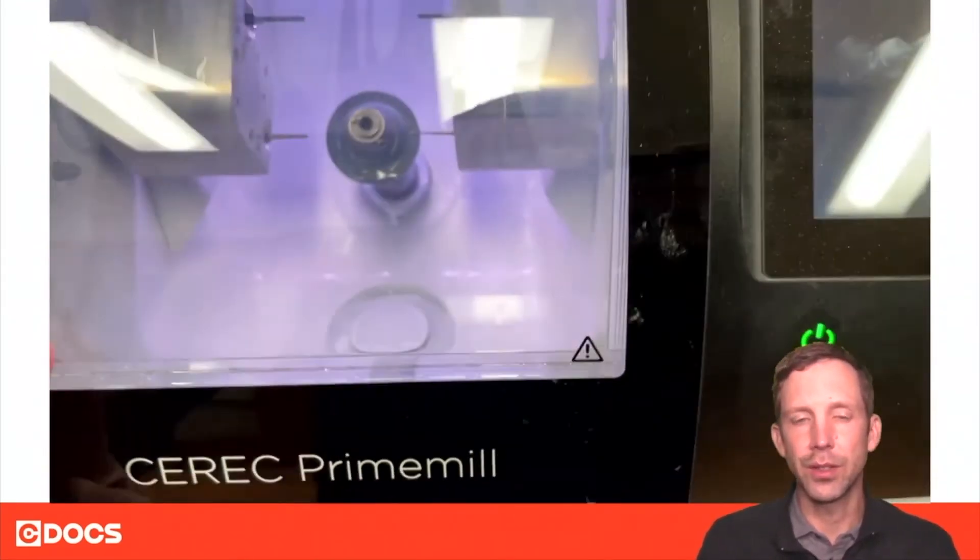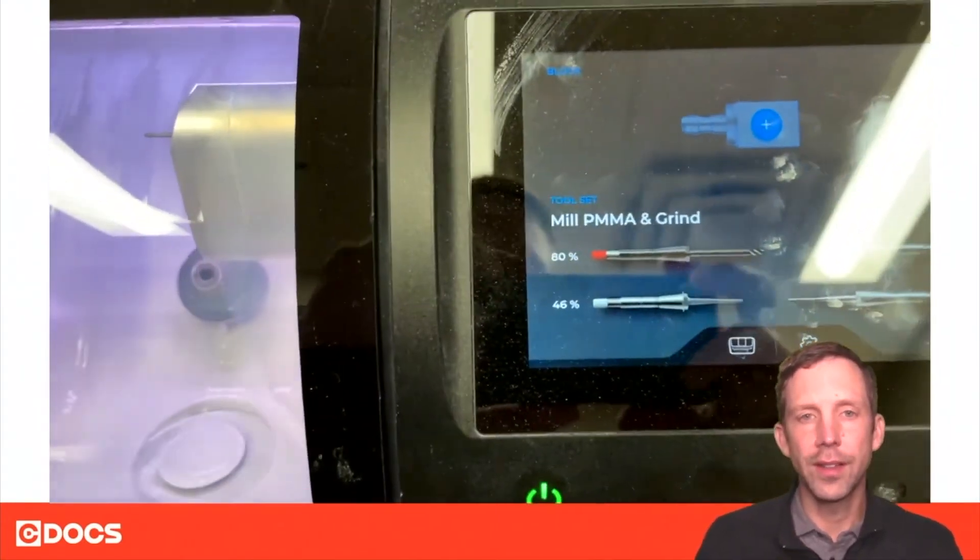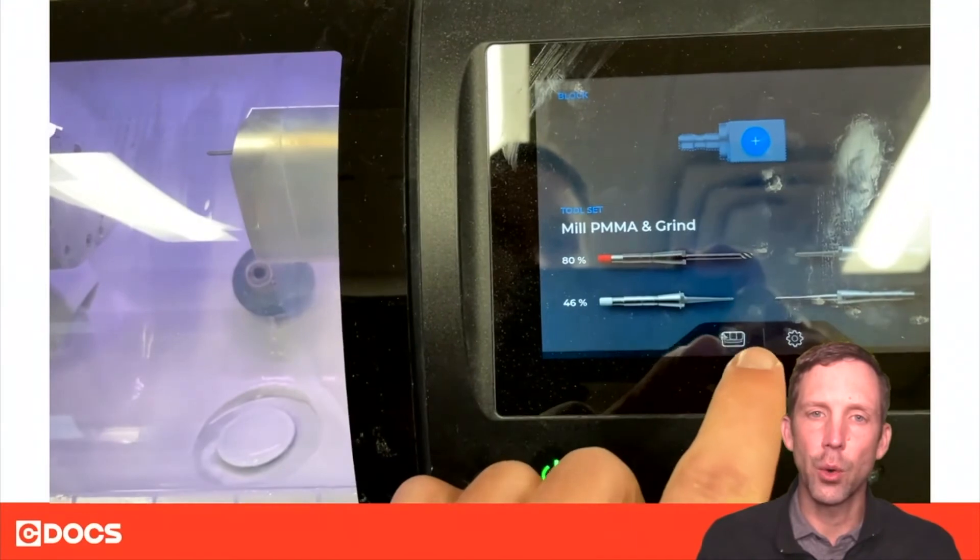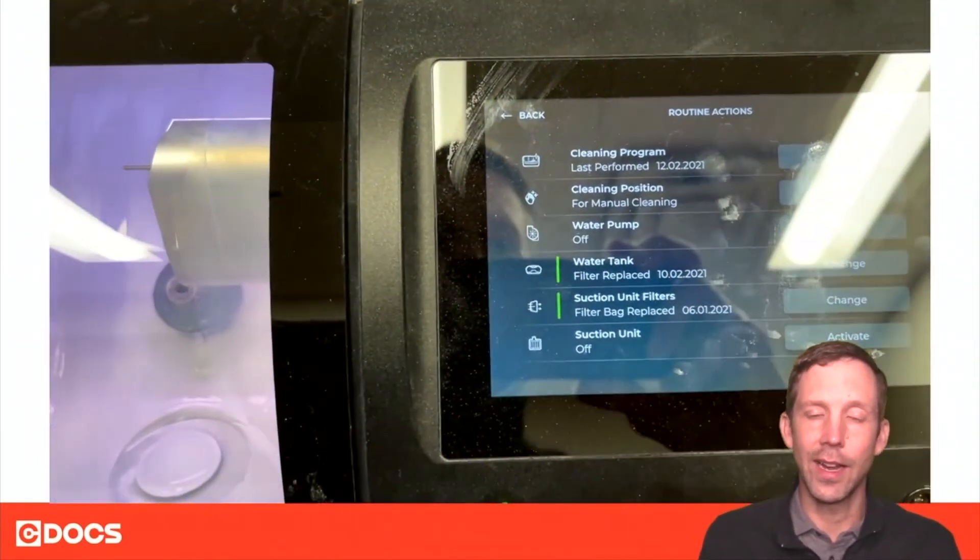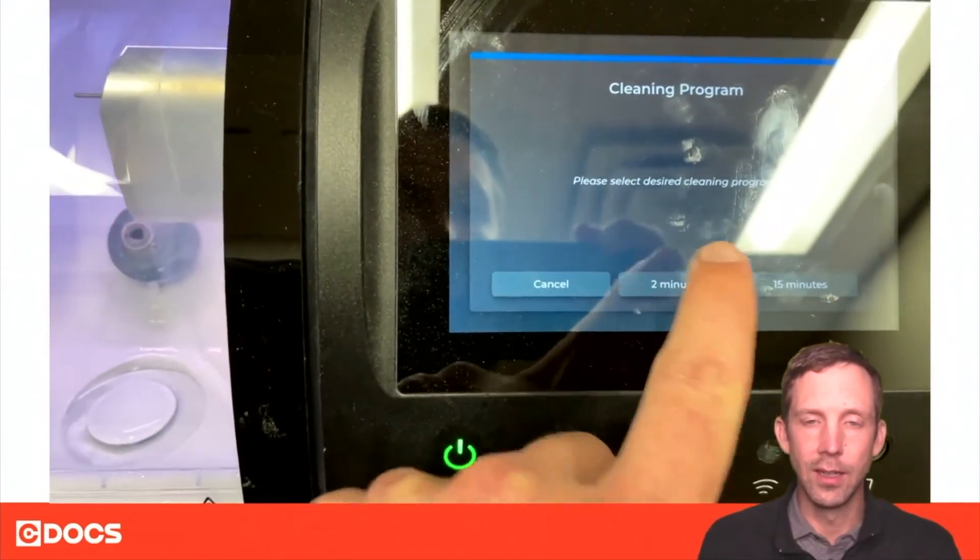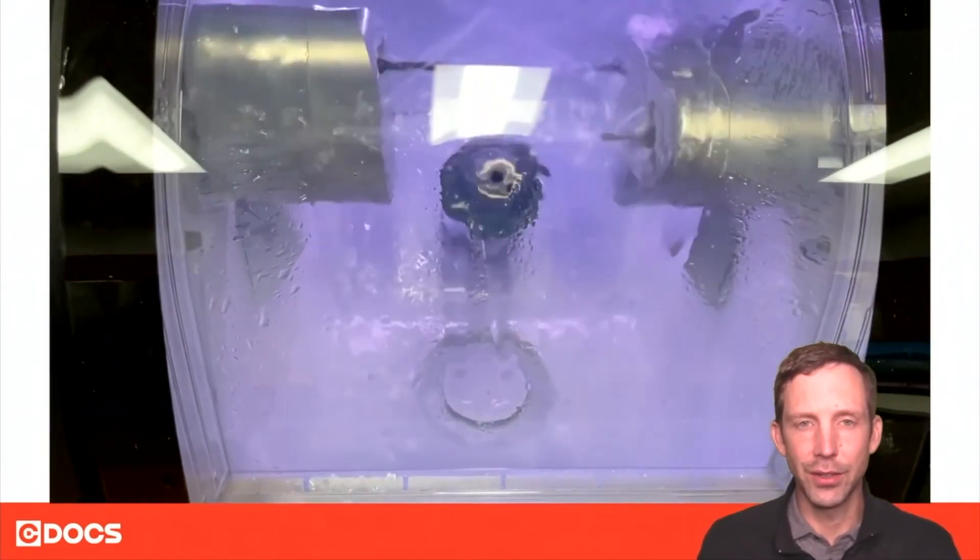It's because when I'm done doing surgical guides or after a day of zirconia, we go onto the touchscreen and run a very quick cleaning cycle. Generally I just run the two-minute cleaning cycle and that's going to be enough to keep it clean. Run that once a day and you'll never have to worry about a dirty milling chamber.